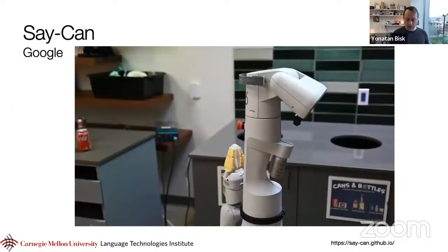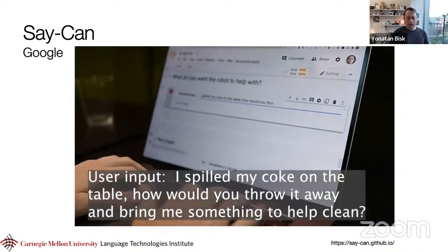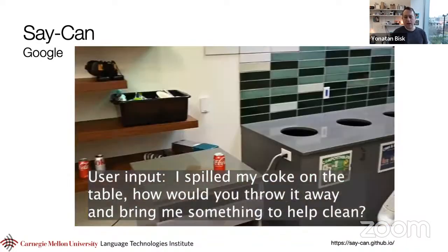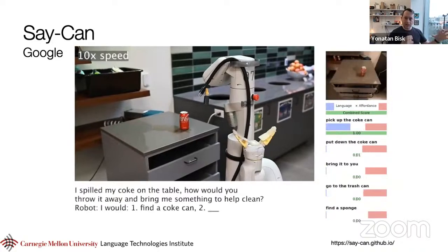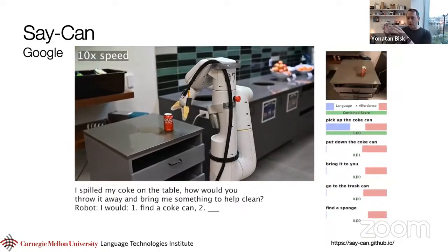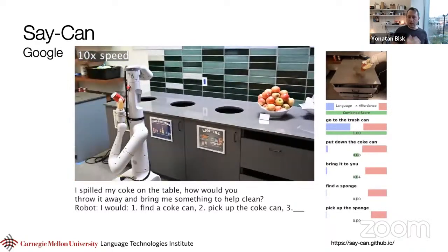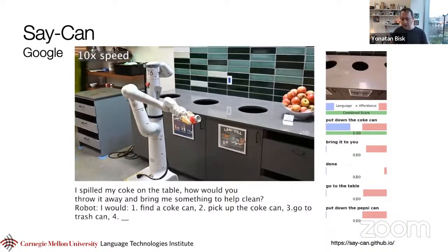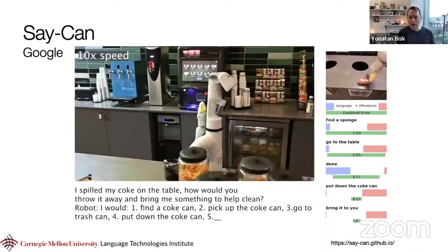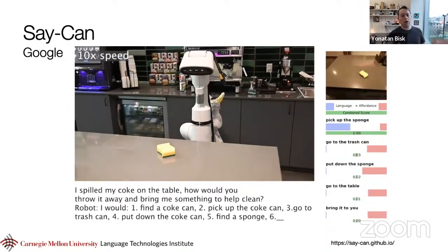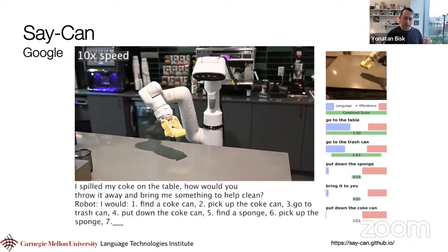I'm going to start with a really nice demo — some work from Google called SayCan. He's going to instruct it that he spilled a Coke, wants to throw it away, and then figure out how to clean it. What's going to happen is the language model takes those high-level tokens, that high-level description, and comes up with high-level sub-goals to accomplish. If I need to take the Coke to the trash can, then picking it up first would be necessary, then I have to put it down at the right place, and eventually it finds a sponge as the necessary tool for cleaning. On the one hand, this is incredibly impressive.